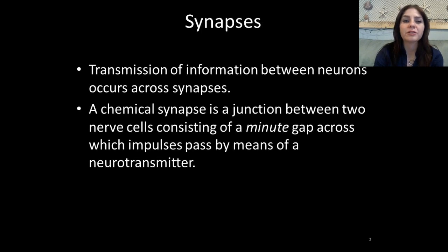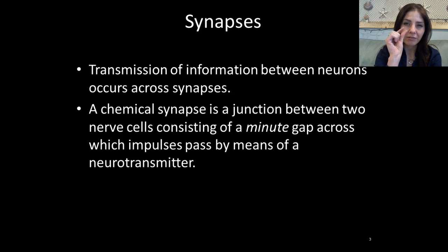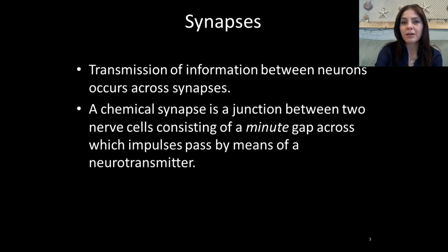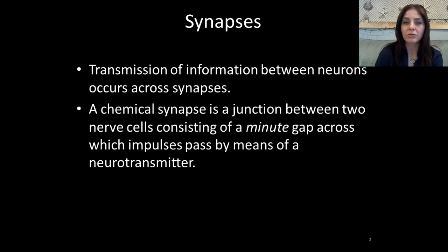At synapses. The transmission of information between neurons occurs across what we call a synapse. A chemical synapse is a junction between two nerve cells consisting of a minute gap — minute meaning very, very small. The axon terminus of one cell does not directly touch the dendrites of the next, so we have to have a way of transferring that information, and we do so by means of impulses that get passed along by neurotransmitters. Neuro is referring to the nervous system, and transmitter is something that's going to transfer one thing from one end to the next.